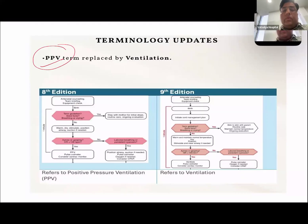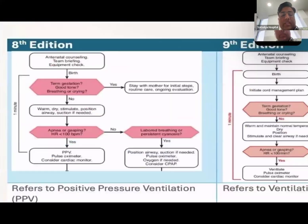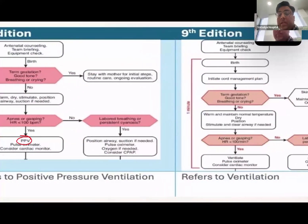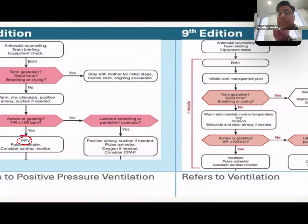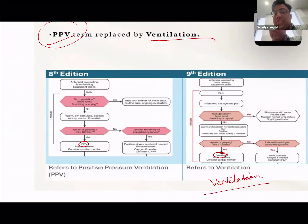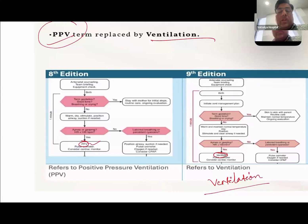Second change is in terminology: they have changed from PPV to 'ventilation.' Previously, if baby is not improving after initial steps, the instruction was to start PPV — positive pressure ventilation. Now in the ninth edition, if baby is not improving and is still apneic or gasping, the instruction is to start ventilation. The purpose is not just to give positive pressure but to ventilate the lungs, since ventilation is the most effective and most important step in neonatal resuscitation.